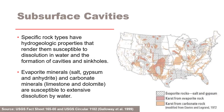This map shows areas where certain rock types susceptible to dissolution in water occur. These rock types are evaporites like salt, gypsum, and anhydrite, and carbonates like limestone and dolomite. Evaporite rocks underlie about 30 to 40% of the USA, though in many areas they are buried at great depths.